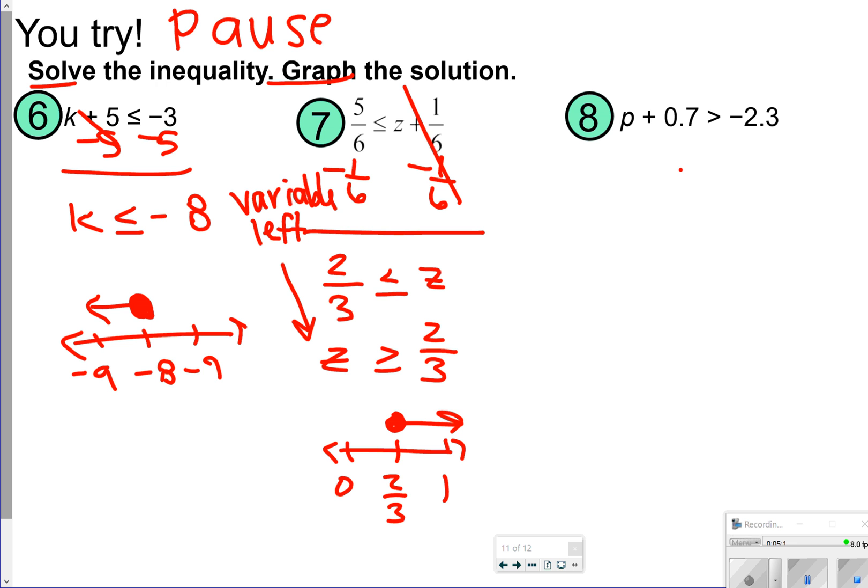And then number 8, I'm just going to subtract 0.7 from both sides. So p is greater than negative 3, because you're actually adding those numbers together. And then I'm going to graph that one. So I have negative 4, negative 3, negative 2. Open circle pointing right for number 8.